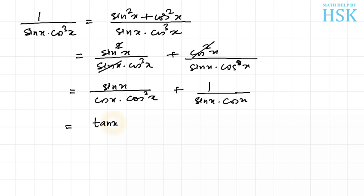In this term, sin x upon cos x equals tan x, and 1 upon cos square x can be written as sec square x. So we can integrate tan x into sec square x by substituting tan x equal to t. But the second term has not yet been simplified into a form which can be integrated easily.